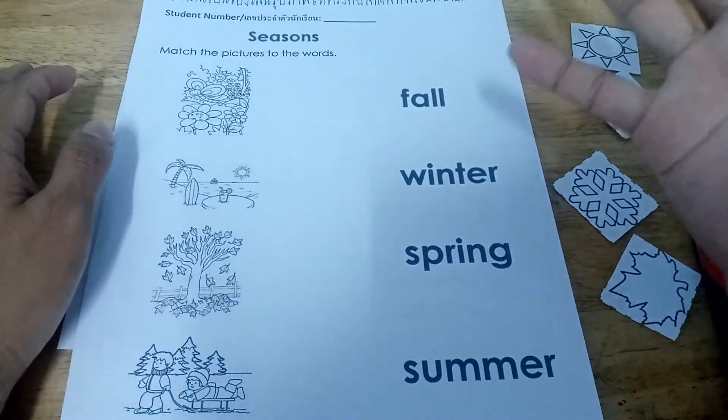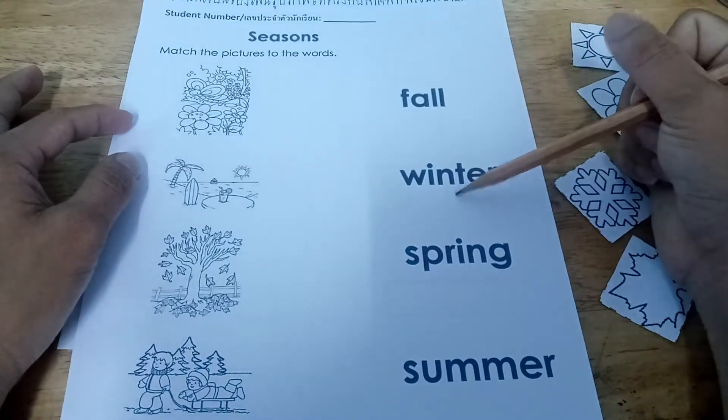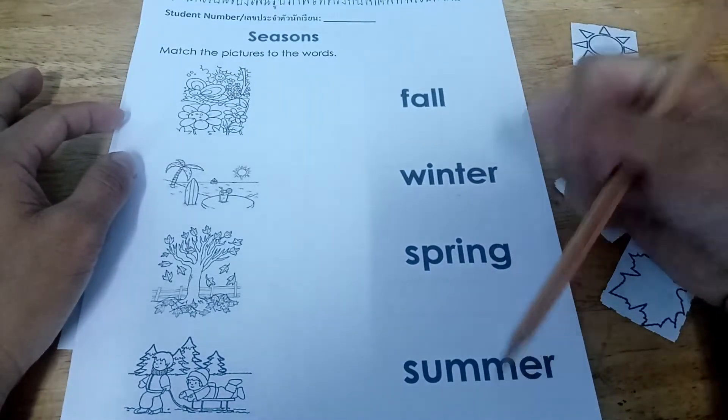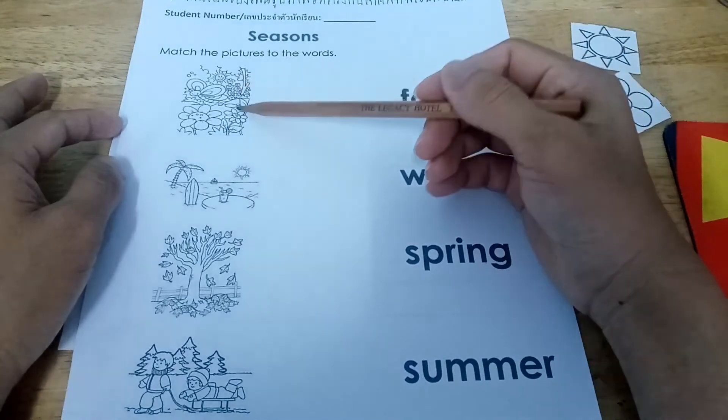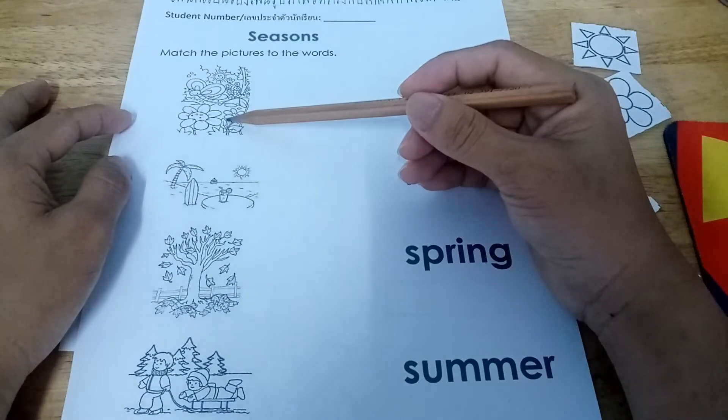So, we have four kinds of seasons. Fall, winter, spring, summer. Again, this is, what picture is this? This show for?